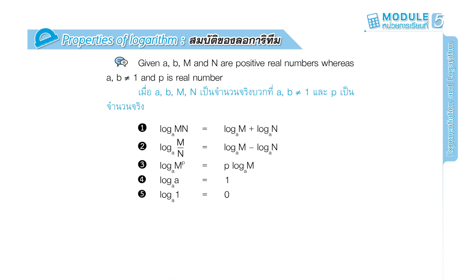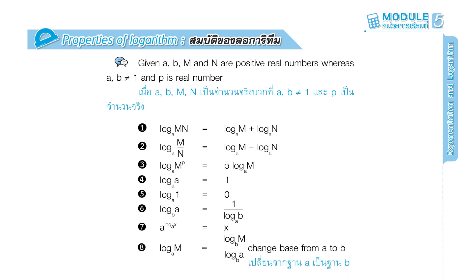Property 5: log 1 base a equals 0. Property 6: log a base b equals 1 over log b base a. Property 7: a to the power of log x base a equals x. Property 8: log m base a equals log m base b over log a base b.